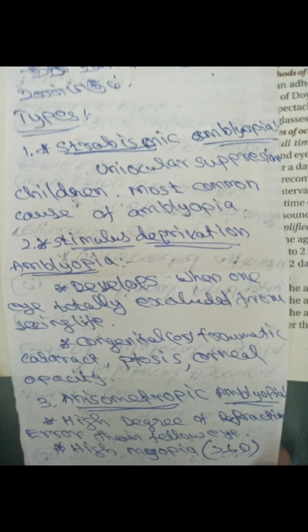Anisometropic amblyopia — what do you think? The amount of refractive power differs between the two eyes. That's why there is an amblyopia. You can see one eye has a different refractive power — this is anisometropic amblyopia. One eye differs from the other. There is no shade. One eye is full power, the other is different.